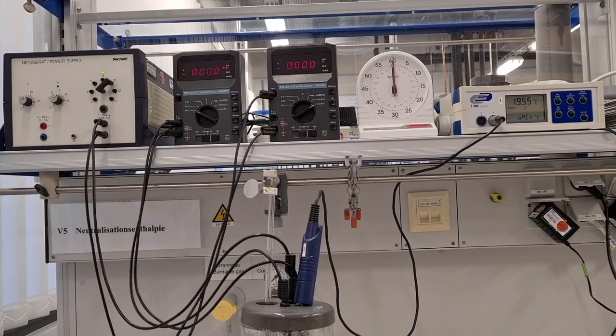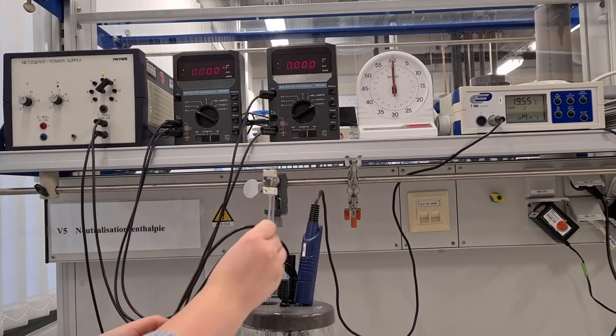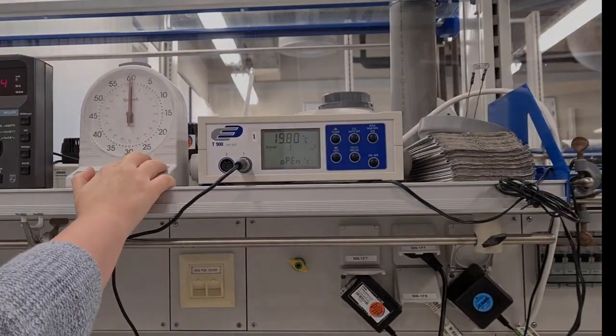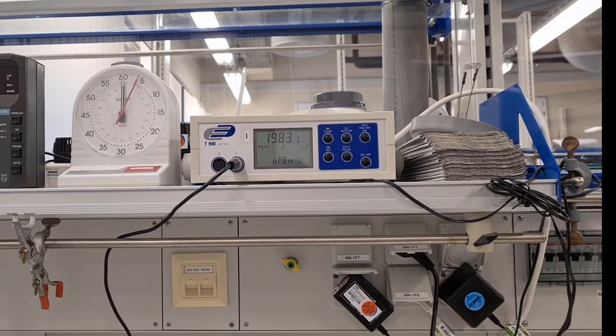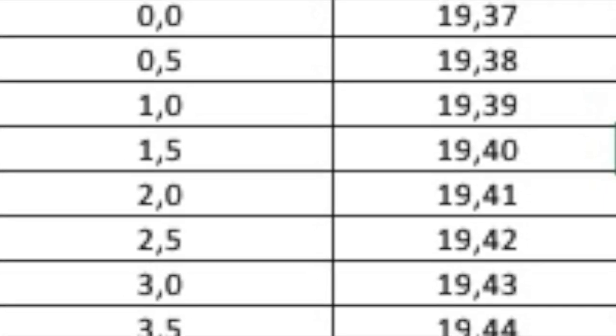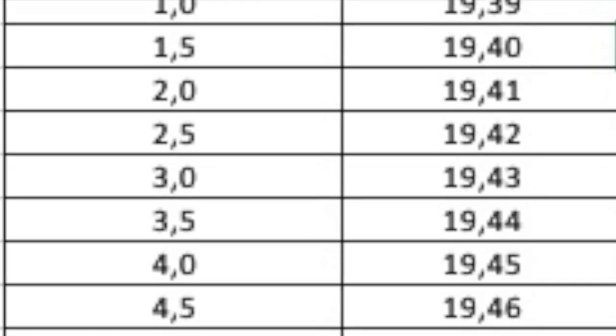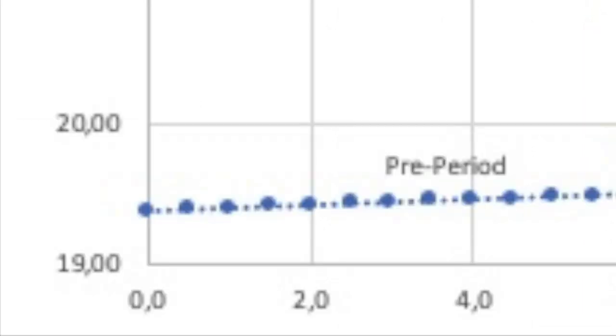The ammeter is connected in series and the voltmeter in parallel with the power supply. The water is now heated electrically by means of a heating coil for 10 minutes. Starting 5 minutes prior to heating, temperature is recorded every 30 seconds, the so-called pre-period.